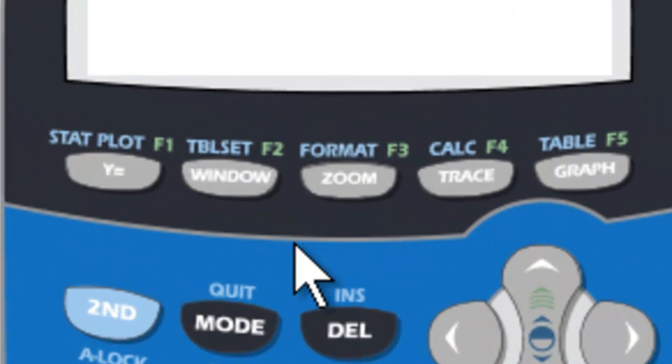You'll notice in blue above these keys the functions Stat Plot starting on the left, all the way to Table on the right. To access these blue functions, and any other blue functions above the keys on the keyboard, first press the 2nd key, which is analogous to a shift key on a computer keyboard.